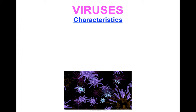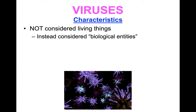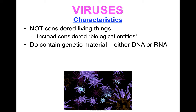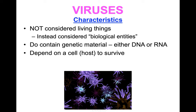Now let's talk about viruses. Viruses are not considered living things. They do not have a metabolism, cannot reproduce on their own, are not made of cells, and can't respond to stimuli or adapt to the environment on their own. Instead, we refer to them as biological entities. They do have genetic material — either DNA, which can be double-stranded or single-stranded, or RNA, which can also be single-stranded or double-stranded. The key thing that makes viruses not living is that they have to depend on a living cell — their host — in order to reproduce and use energy.